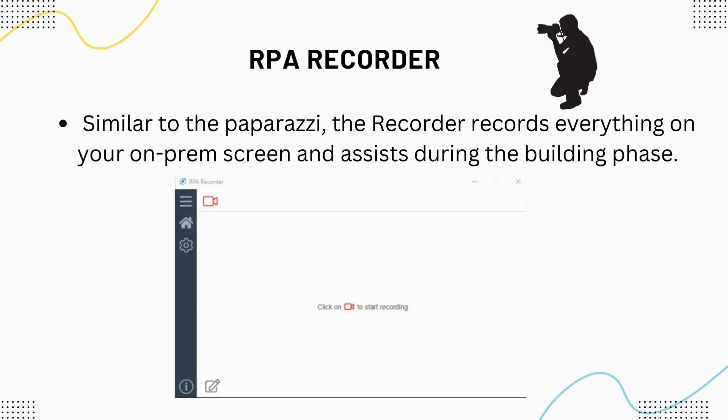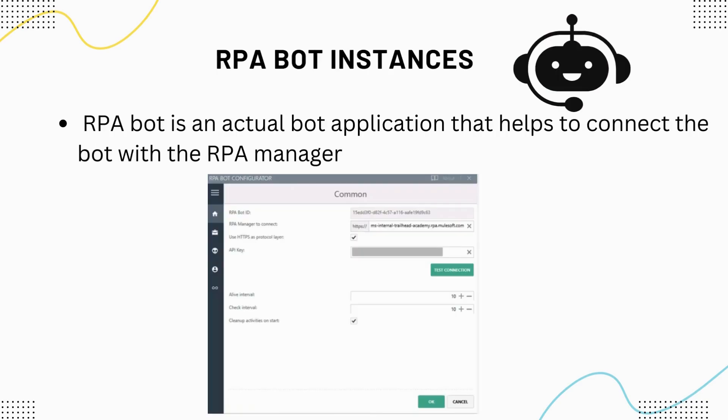The next component is RPA Recorder, which is similar to paparazzi — the recorder records everything on your on-premises screen and assists during the building phase. You can also use RPA Recorder to build your BPMN diagram.